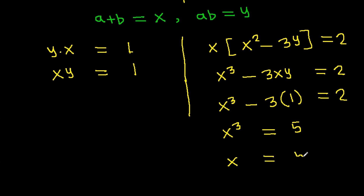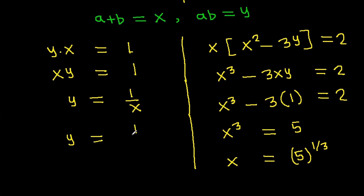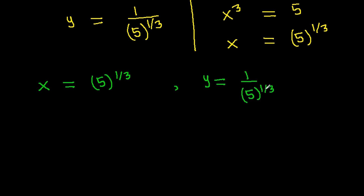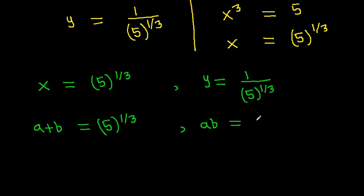So x equals 5 to the power 1/3. From xy equals 1, we get y equals 1 over x, so y equals 1 over 5^(1/3). Thus x equals 5^(1/3) and y equals 1 over 5^(1/3).